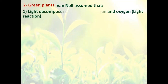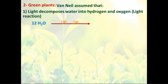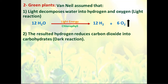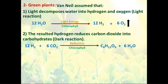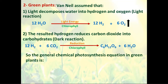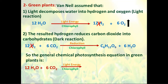But in the case of plants, the light decomposes water into hydrogen and oxygen in a light reaction. So 12 water molecules are split or decomposed by light energy in the chlorophyll, giving us 12 hydrogen plus six oxygen, which is evolved. The resulting hydrogen is used to reduce carbon dioxide in exactly the same dark reaction, giving us one glucose and six water. So the general chemical photosynthesis equation in green plants is: 12 water + 6 carbon dioxide, in the presence of light energy and chlorophyll, gives one molecule of glucose plus six water and evolved oxygen.